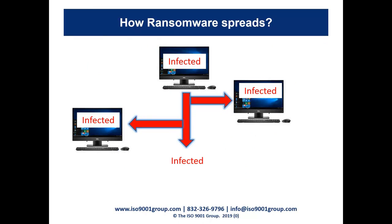So how is ransomware spread? It starts with one computer or individual being infected. In today's connected world, everybody is connected to their company network. If my machine gets infected by clicking a malicious link, that infection spreads through the exchange server to other computers on the network, eventually reaching the file server where all critical files reside, and then it starts encrypting those files. It's like a small fire lit in one corner of a forest that turns into a massive forest fire.